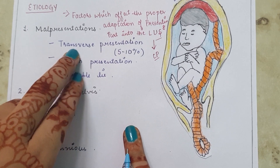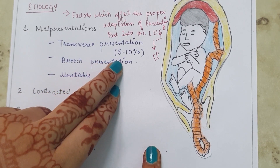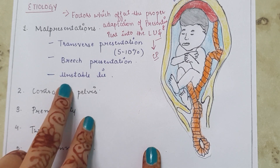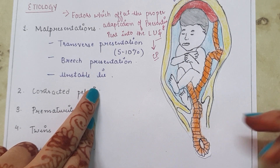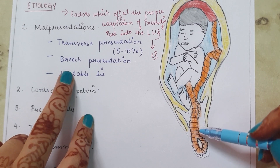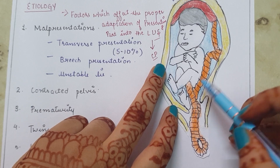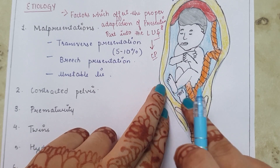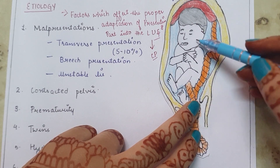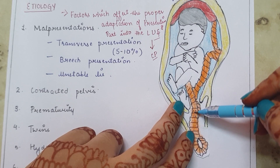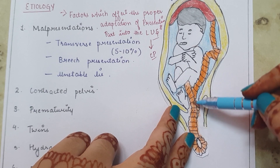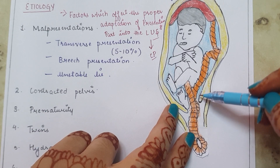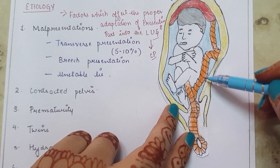Under malpresentation: transverse presentation or transverse lie of the fetus contributes 5–10%. Next is breech presentation, and next is unstable lie — when the lie of the fetus changes. In the diagram of breech presentation, there is enough space available at the lower uterine segment. Because of this vacant space, the umbilical cord easily slips down and lies below the presenting part, leading to cord prolapse.